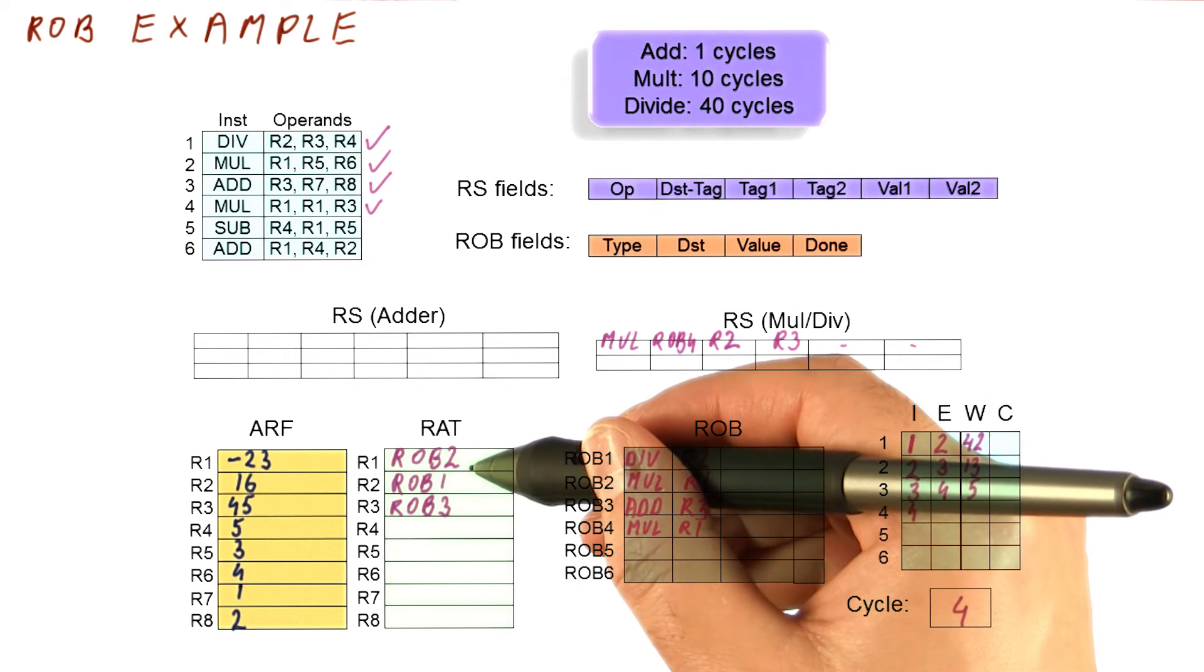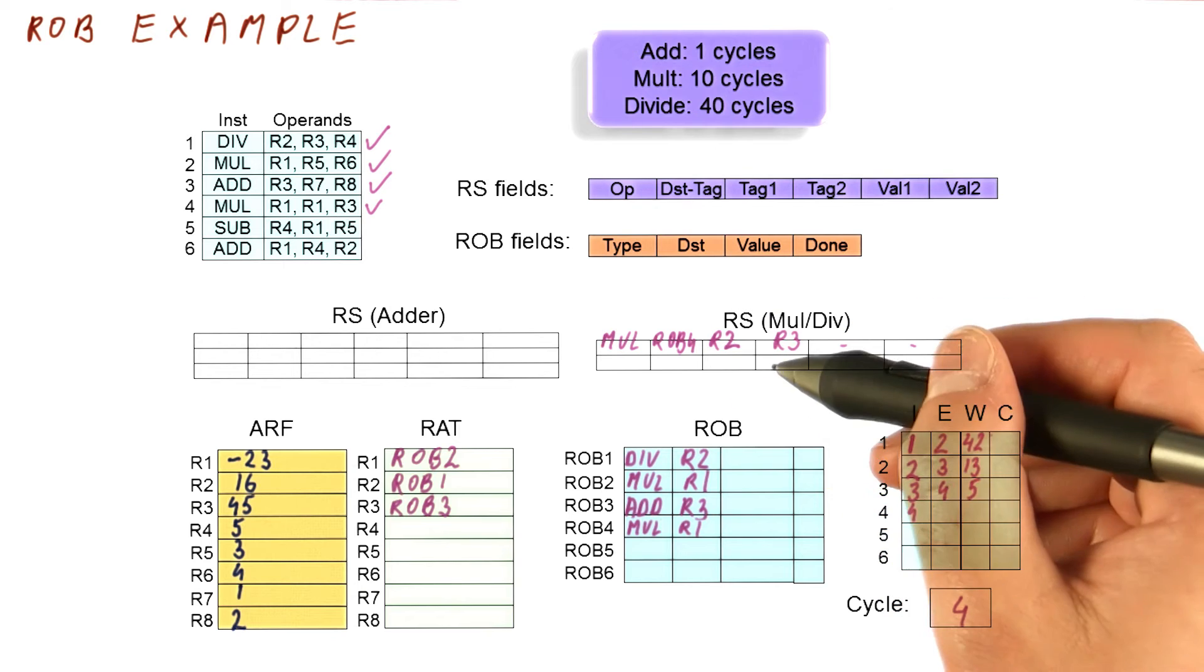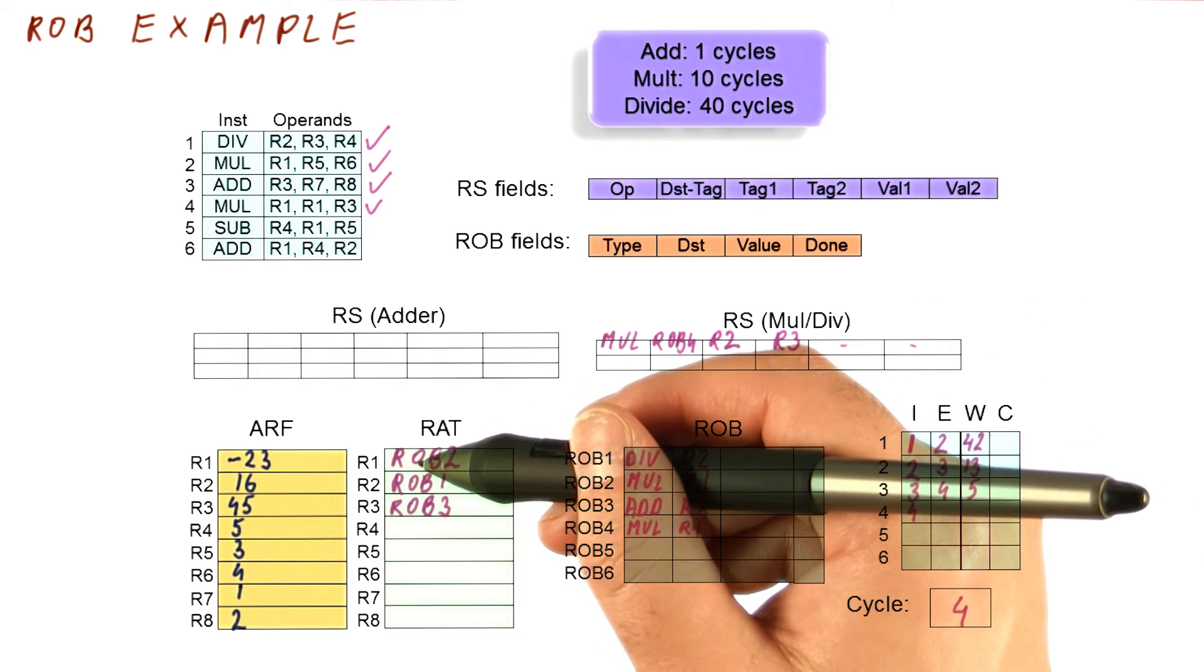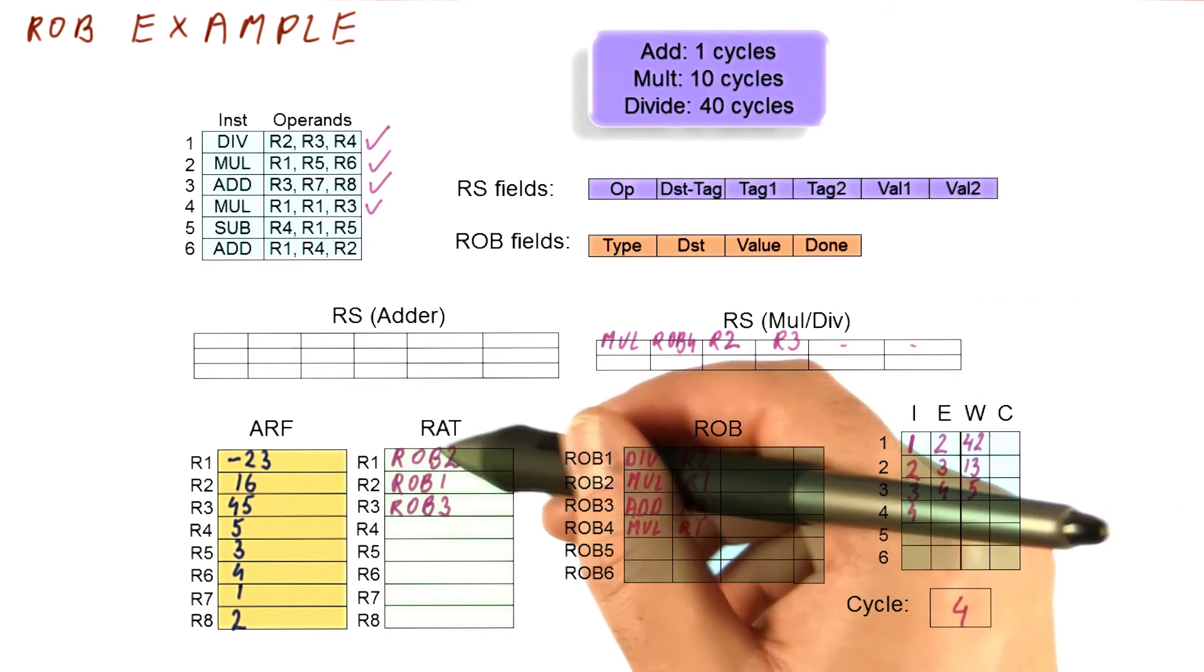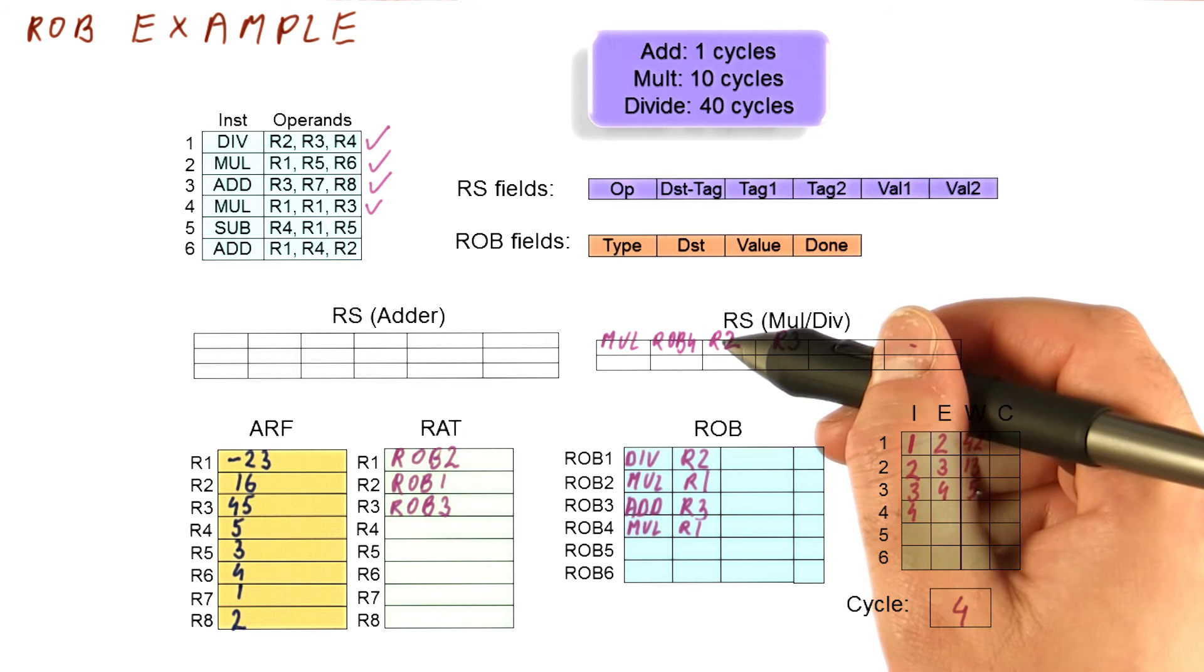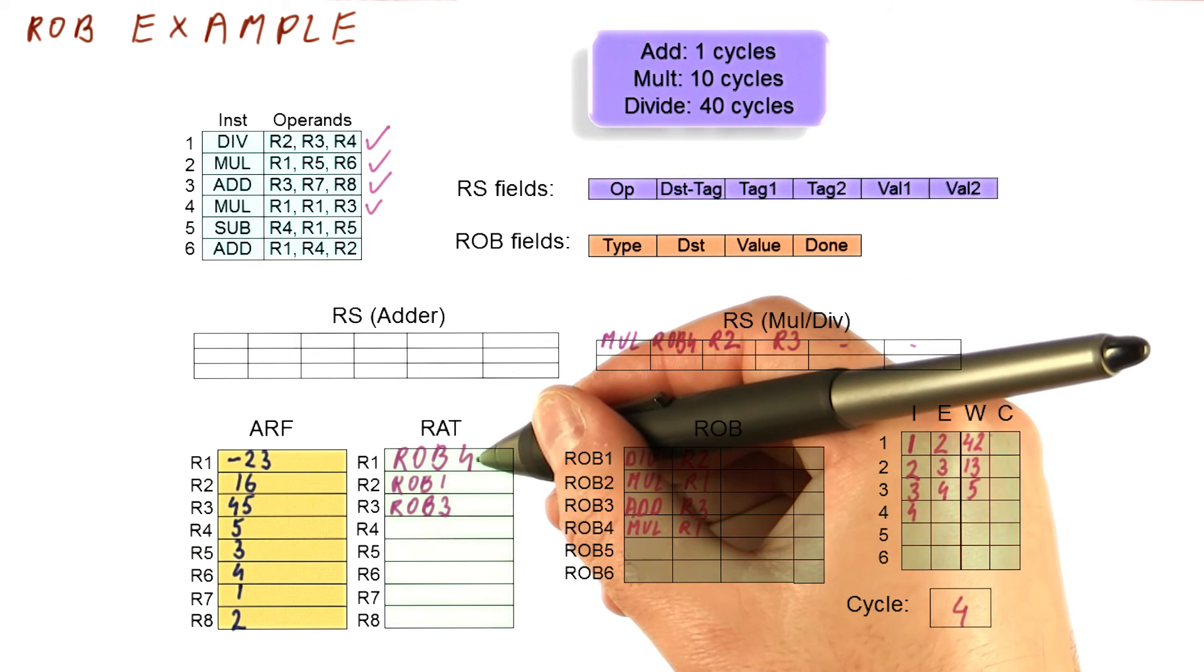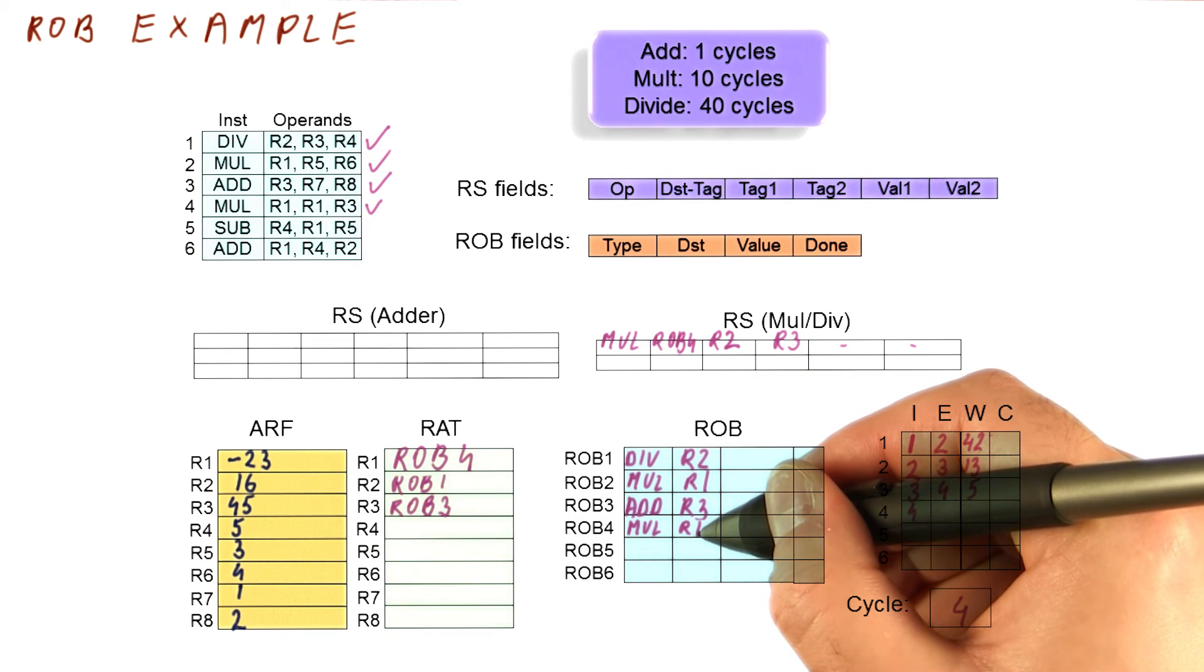Be careful when you update the RAT. You first need to check where do you find your register inputs, and then you rename for your outputs. Because if one of your inputs gets overwritten with your output, you first need to use the values of the RAT before you rename. Otherwise, the instruction would be waiting for its own result, which will never happen.